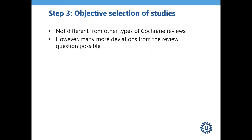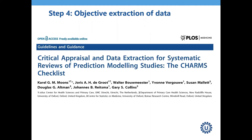The next step is objective data extraction from selected publications. Guidance has been developed in the form of the CHARMS checklist. This helps reviewers extract data across 11 domains covering different types of information found in primary prognosis studies. Per domain, there are signaling elements that need to be extracted to fill the review, and this step is also important for conducting a proper critical appraisal and risk of bias assessment.